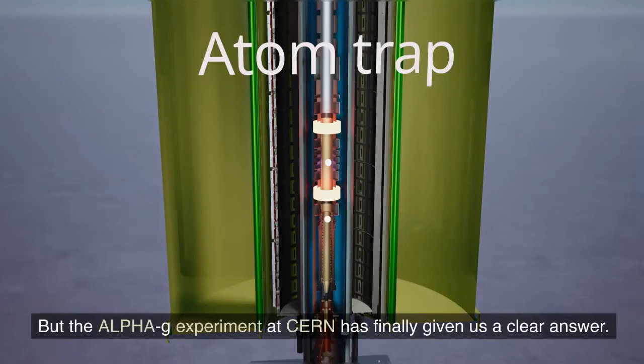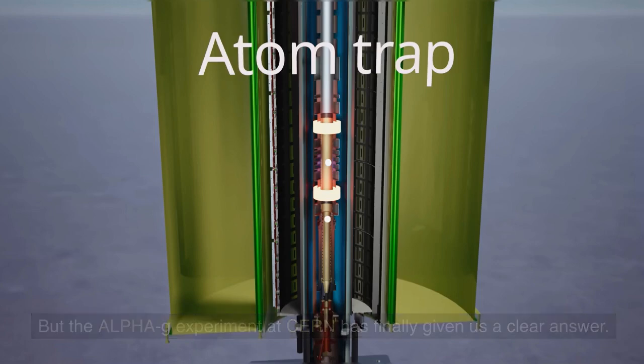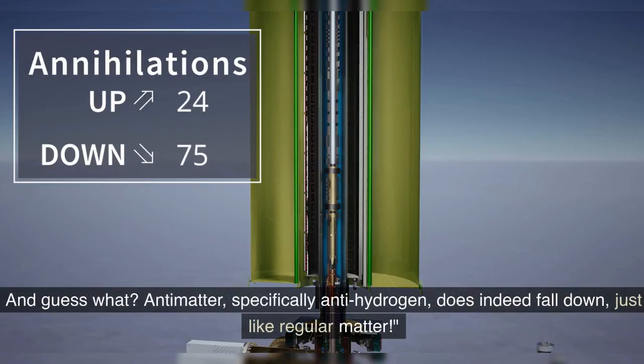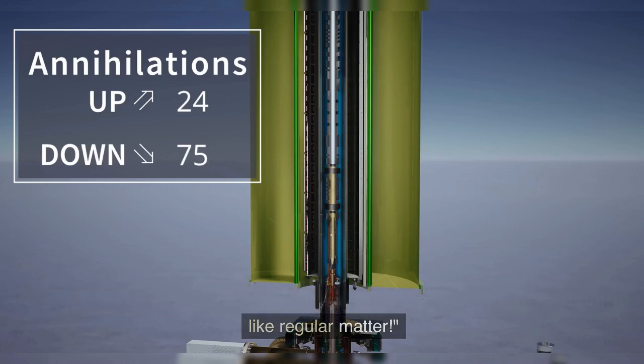But the Alpha-G experiment at CERN has finally given us a clear answer. And guess what? Antimatter, specifically anti-hydrogen, does indeed fall down, just like regular matter.